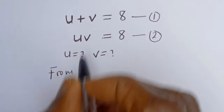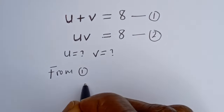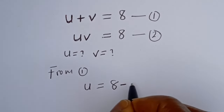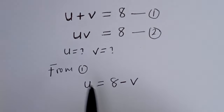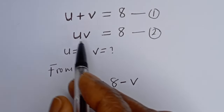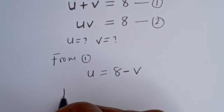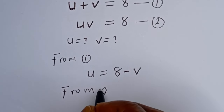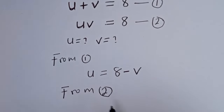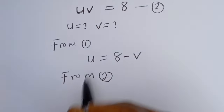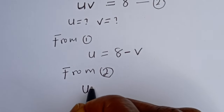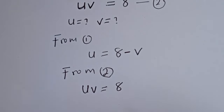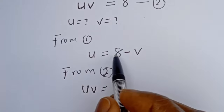From equation 1, let's make u the subject of the formula: u is equal to 8 minus v. Also, from equation 2, we can now substitute for v.